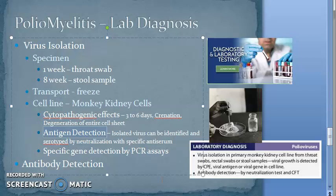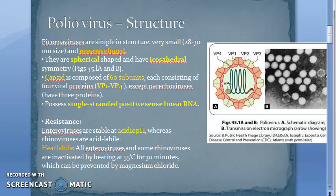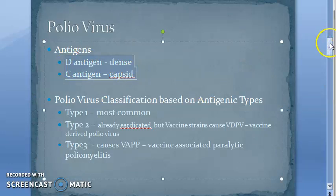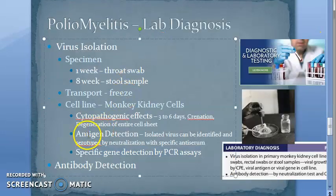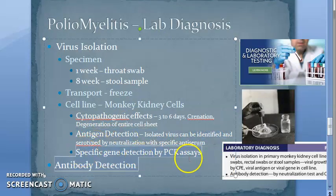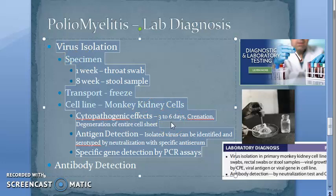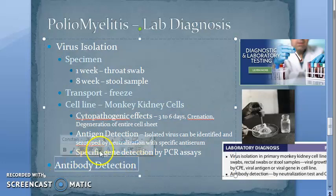The antigens you can detect are D and C antigens — dense and capsid. You can detect these antigens, or you can also detect the specific gene by PCR assay. So for virus isolation: first take the specimen from the patient, culture it in monkey kidney cells, observe cytopathogenic effects, detect antigen, and also perform PCR assay.